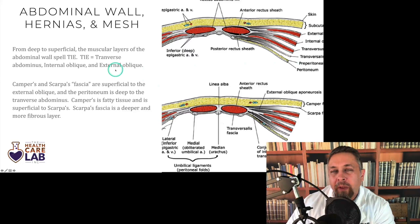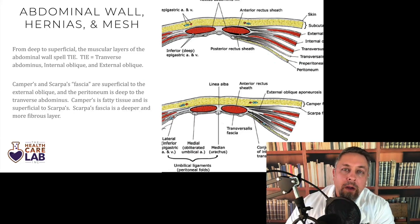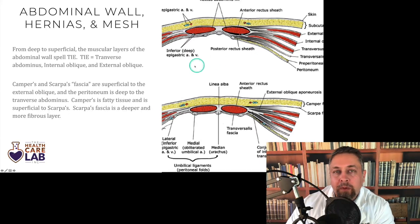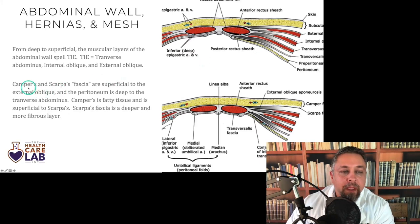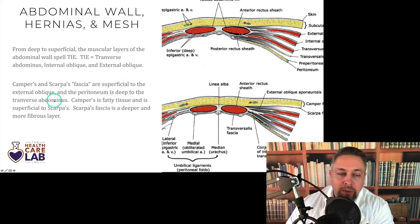An easy way to remember the musculature out laterally of the abdominal wall is the word TIE, and that'll come up when we talk about the arcuate line of Douglas. Just remember: lateral anterior abdominal wall TIE deep to superficial — transverse abdominus, internal oblique, external oblique. Camper's and Scarpa's fascia are superficial to the external oblique, and the peritoneum is deep to the transverse abdominus.